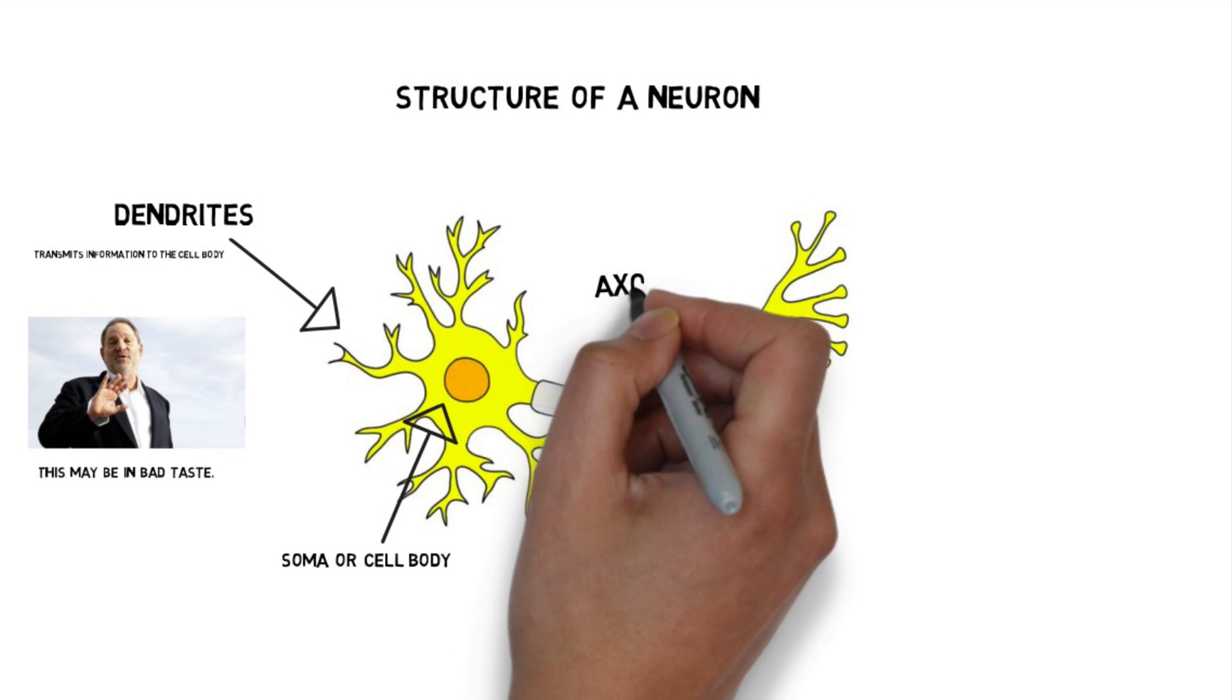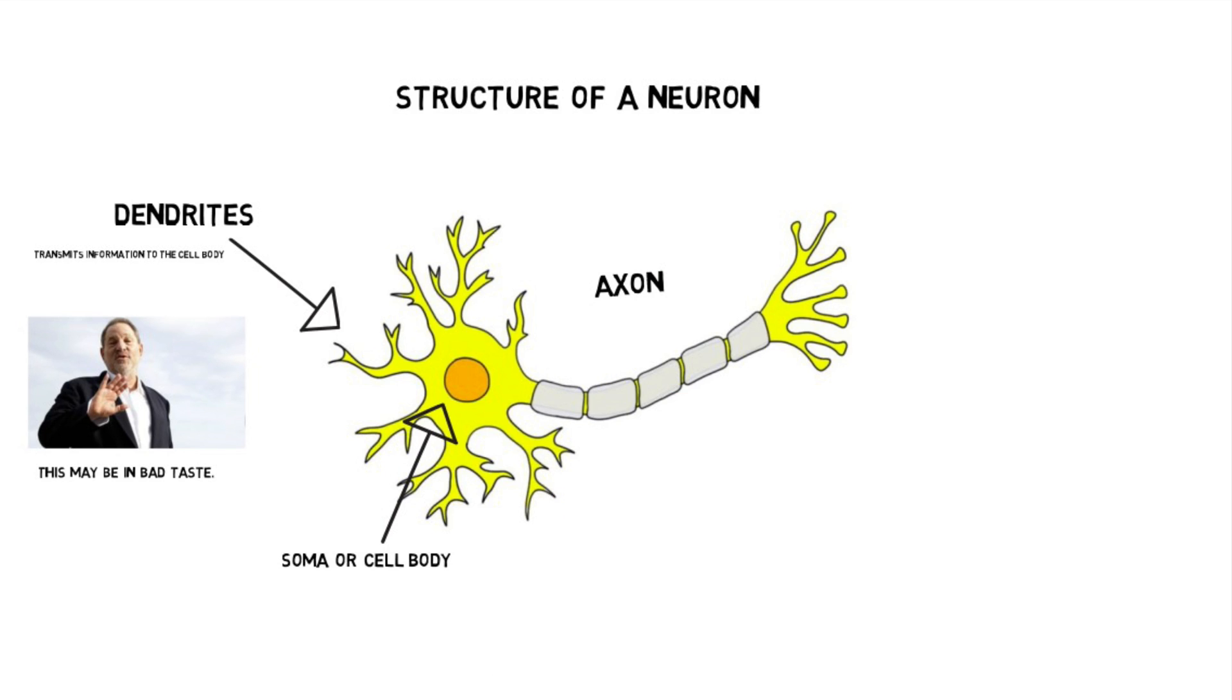Below the cell body, you have something called the axon. The axon is a wire-like structure that sends electrical messages from one side of the neuron all the way to the other.